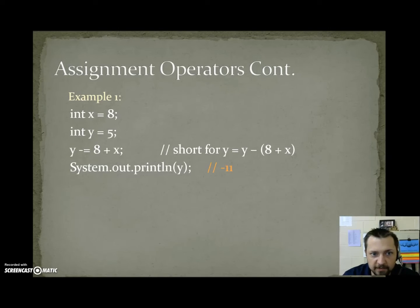Example 1. Int x equals 8, int y equals 5. If we were to say y minus equals 8 plus x, this is short for doing y equals itself minus the right-hand side. The right-hand side is not minus 8 and then add x. So if we look over to the right, it's going to show what it really is short for: y equals itself minus the right side. Notice the right side has two terms, so we put 8 plus x. So it's not minus 8 and then add x. It's minus whatever 8 plus x is. 8 plus x is 8 plus 8, resulting in 16. So y equals itself minus 16. Y equals 5 minus 16, negative 11.